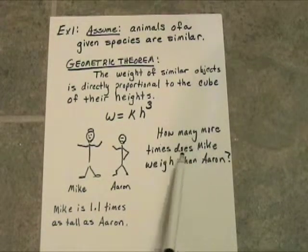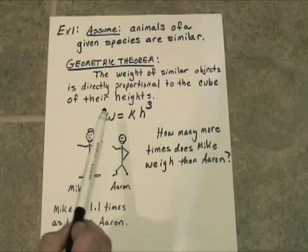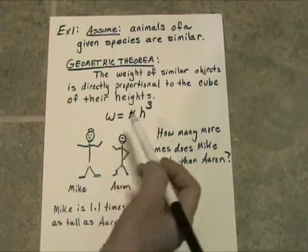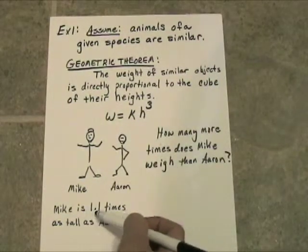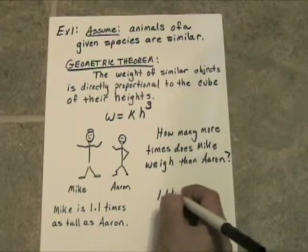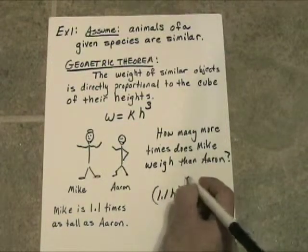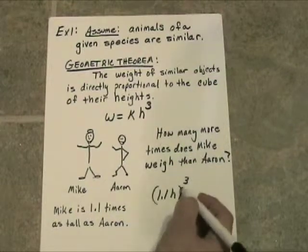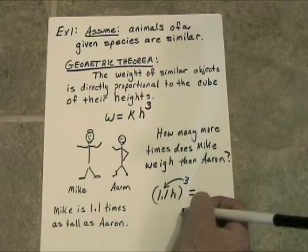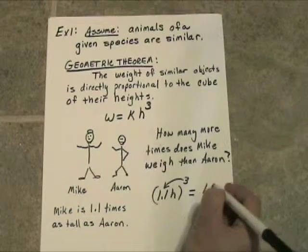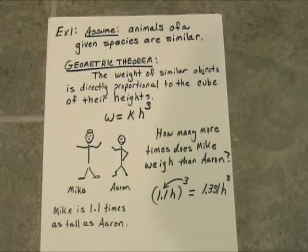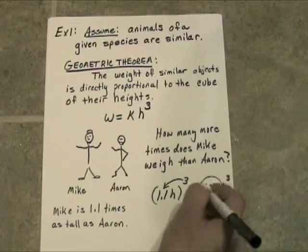How many more times does Mike weigh than Aaron? The weight varies directly as the height cubed. So if we take the height and multiply it by 1.1, we're really looking at 1.1 times the original height, and then that whole thing has to be cubed. The height's being cubed and so is this increase amount. We take 1.1 to the third power and we get 1.331, and of course we'll have h³ as well. That's how much more he weighs.